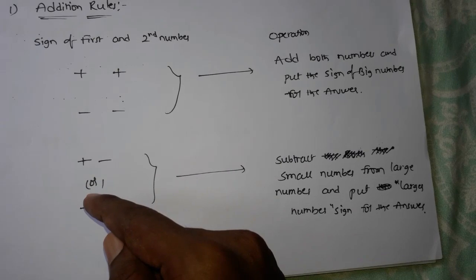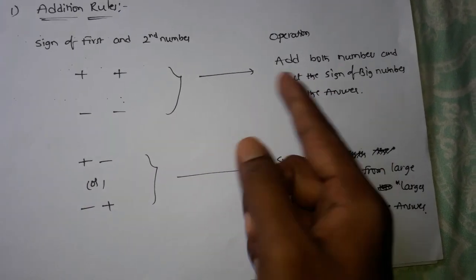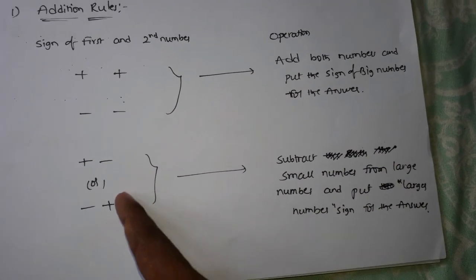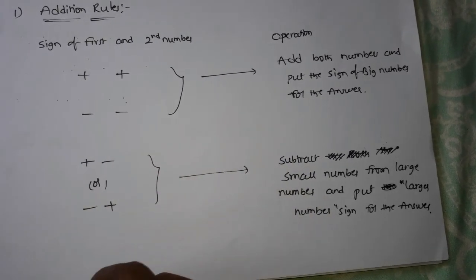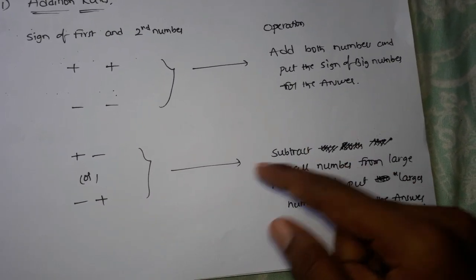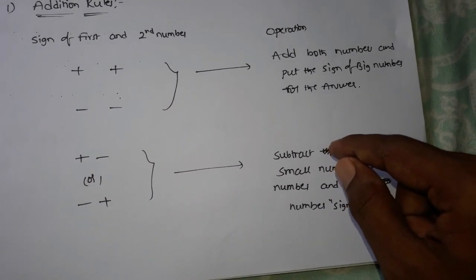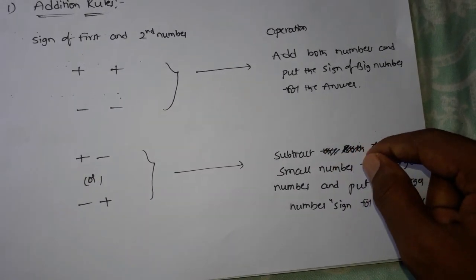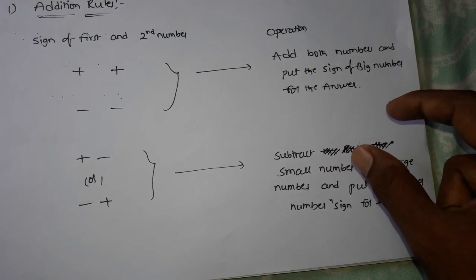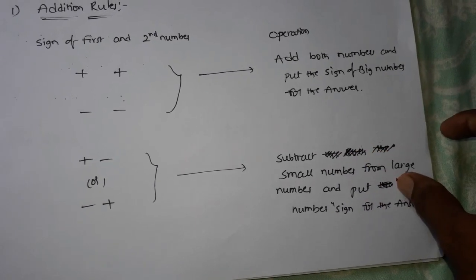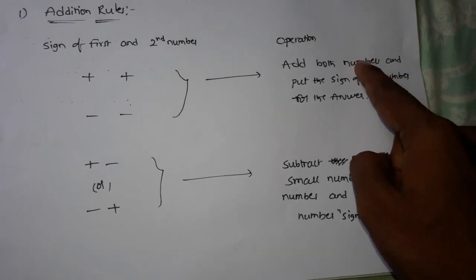When one number is plus and another number is minus, perform addition. Or when one number is minus and another number is present, perform addition. For these types of problems, first subtract the smallest number from the biggest number, and the sign of the big number will be the sign of the answer.